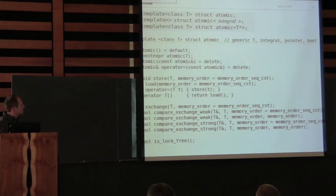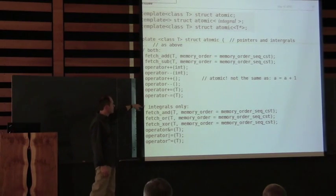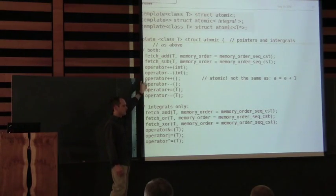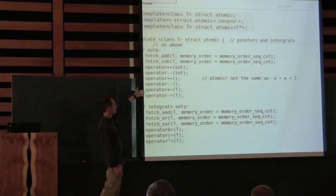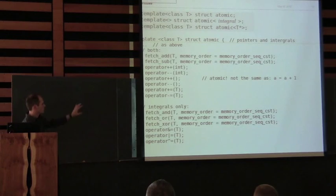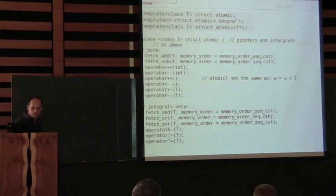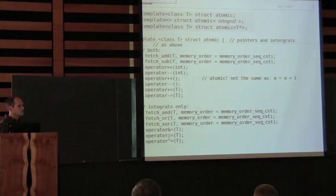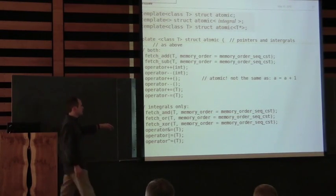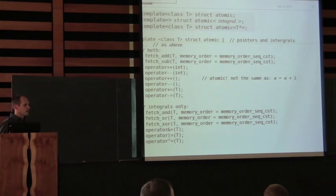Back to the big atomic class — let's look at specializations for pointers and integrals. You get these nice plus-plus, plus-equals and stuff. Even though there's no assignment from atomic to atomic, these are there because they are atomic operations. Processors can do atomic increments, so we expose that. If it's an integral, you even get the atomic bitwise operators. And if a certain processor doesn't support those, then there will be locks inside of it.